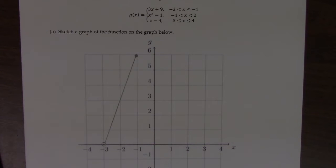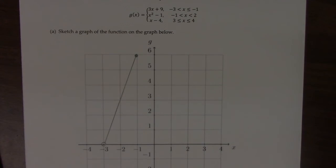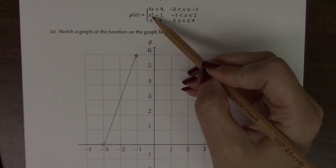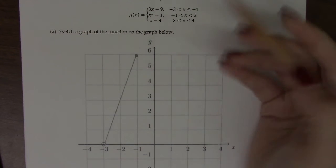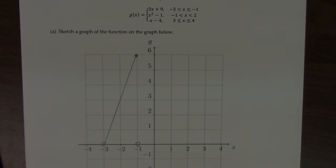The second piece is a quadratic, x squared, shifted down one unit. It's only valid from negative 1 to 2. But notice those endpoints are not included, so we're going to draw open circles at the end. So if I plug in negative 1, I'm going to get negative 1 squared, which is positive 1. 1 minus 1 is 0. So negative 1, 0 is my first point.